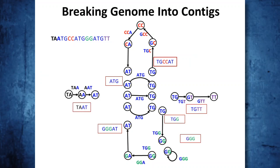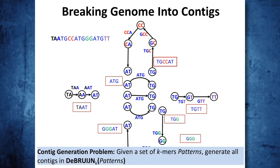This is an imperfect solution, but that's what we want you to do: output contigs that belong to all possible Eulerian paths in the constructed de Bruijn graph. The contig generation problem: given a set of k-mer patterns, generate all contigs in the de Bruijn graph of patterns.